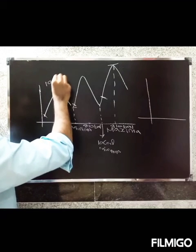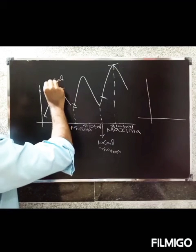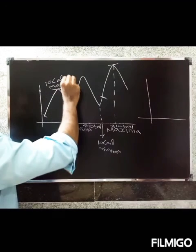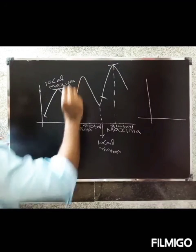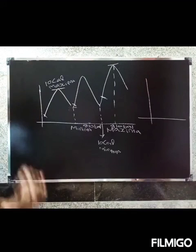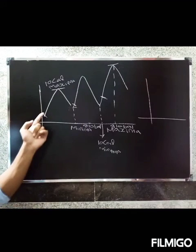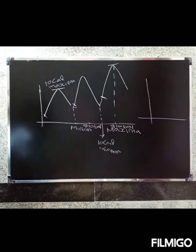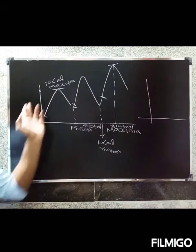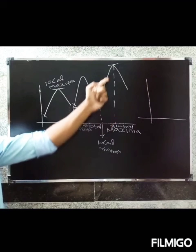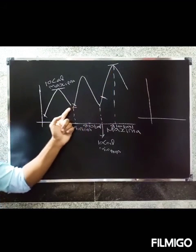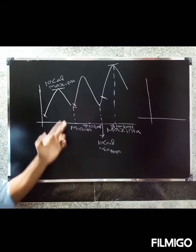So to summarize: local maximum is the maximum over a particular interval, while global maximum is the maximum over the full interval. That is clear. Thank you.